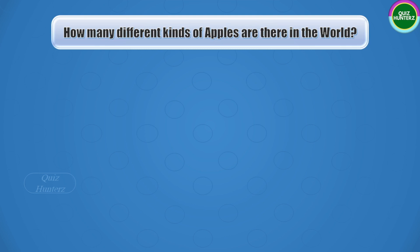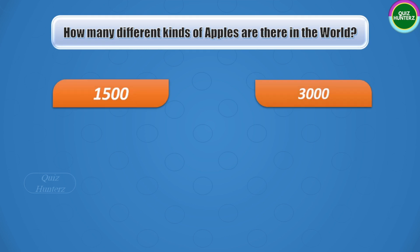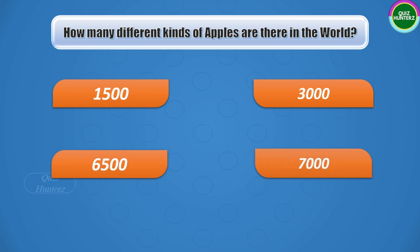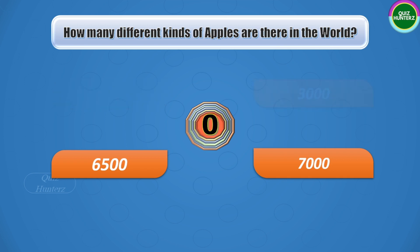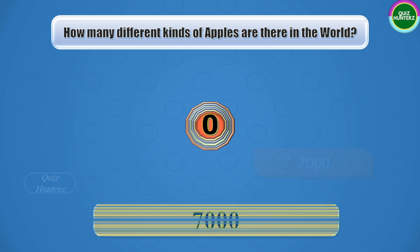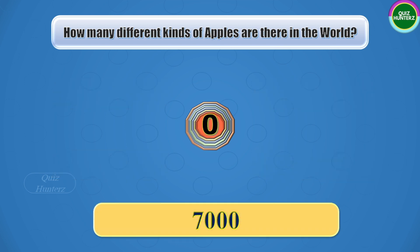Next question: how many different kinds of apples are there in the world? Options are 1,500, 3,000, 6,500, or 7,000. Your time starts now. And the correct answer is 7,000.